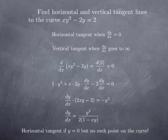For a horizontal tangent, dy/dx equals 0 only if y equals 0, since that makes the numerator 0 while the denominator becomes 2 (nonzero). However, if we plug y equals 0 into the curve equation, we get 0 equals 2, which is impossible. So this curve does not intersect the line y equals 0, meaning there is no point on the curve with a horizontal tangent.